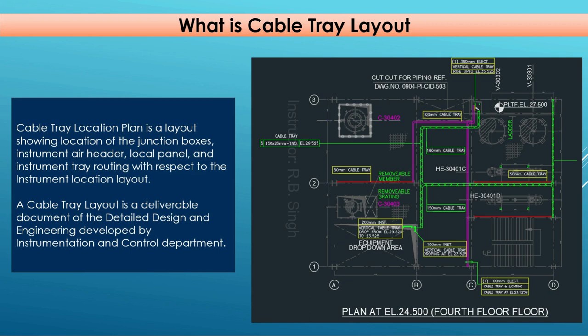For cable laying purposes we need a cable tray, which we lay over the route decided from field junction boxes, local panels, or instrument air headers — from those locations all the way to the control room. Cable tray is a physical medium for laying cables and tubes. The cable tray layout is a dimensional drawing showing the cable tray route. Wherever cables are required, the cable tray will be shown, following a particular route toward the control room. The elevation and size of the cable tray are also indicated.